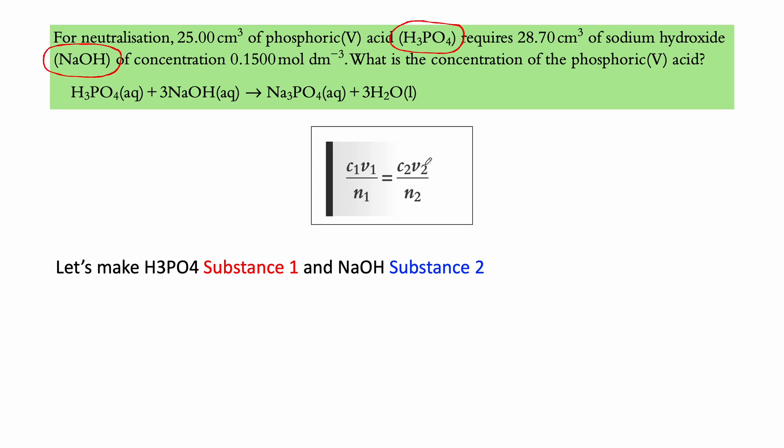So let's figure out these values. So C1, that's what we're trying to find, right? So C1 equals to question mark. V1 equals to, what do we have here? For the neutralization, 25 centimeter cube of phosphoric acid, right? So it's 25 centimeter cube. And n1 here, n1 is from the equation here. So 1 H3PO4 plus 3 NaOH is used to make this. And so the coefficient for H3PO4 based on this equation is 1. That's where we get the coefficients. So we have these.